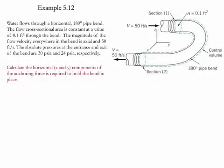Example 5.12. In this example, water is flowing through a horizontal 180° pipe bend. The flow cross-sectional area is constant at 0.1 feet squared throughout the whole bend. The magnitude of the flow velocity is constant throughout the bend and is equal to 50 feet per second. The absolute pressure at the entrance and exit of the bend are given as 30 and 24 psia, respectively. We need to calculate the horizontal components, x and y, for the anchoring force required to hold this bend in place.